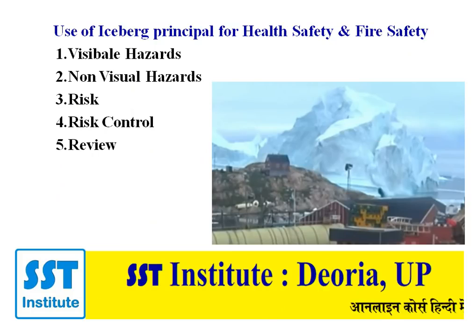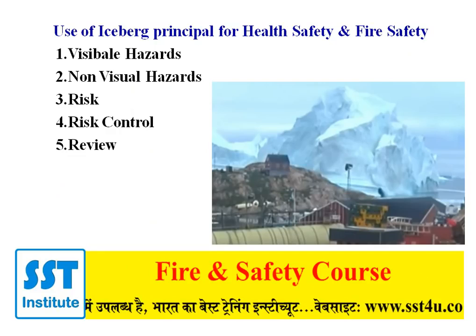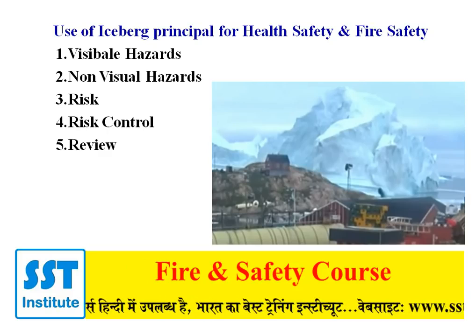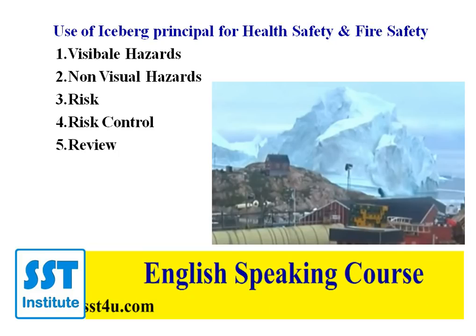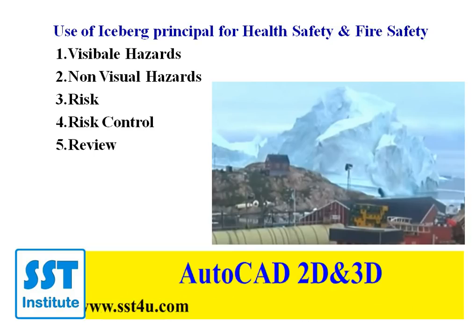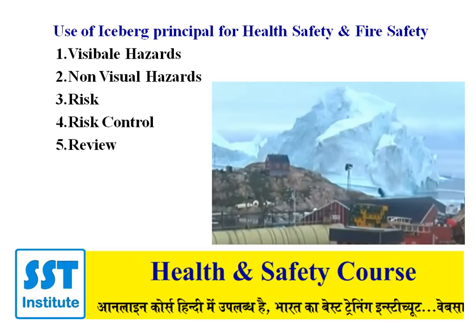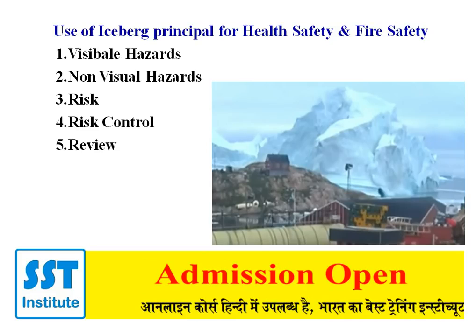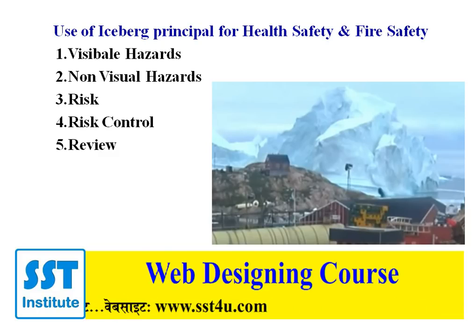Accident और death की बात मैंने की। अब देखिए — अगर 5 चीजों पर ध्यान दें: visual hazard — normally क्या करता है आदमी? जो hazard दिख रहा है उसी के बारे में सोचता है। और यही safety officer और safety manager से गलती होती है। जो दिखाई दे रहा है उस पर ही काम करते हैं। For example — अगर forklift चल रहा है, machinery चल रही है, और उससे casualty हो गई, तो visible hazards पर हमने काम किया था।